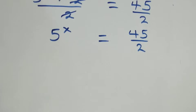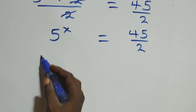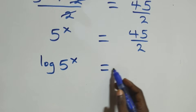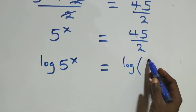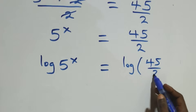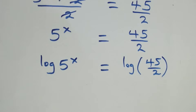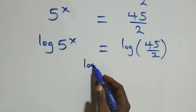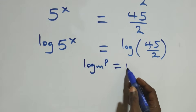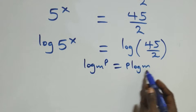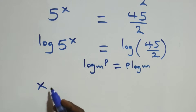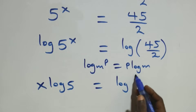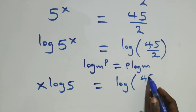The next step, we take the log on both sides — that is, we have log of 5 raised to power x equals to log of 45 over 2. Then we apply the power rule of logarithms: when we have log m raised to power p, this is the same as p log m.